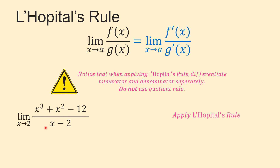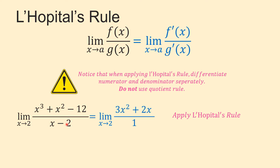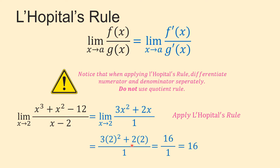So according to L'Hôpital's rule, we differentiate the numerator and denominator separately. The derivative of x³ + x² − 12 is 3x² + 2x. The derivative of the denominator (x − 2) is just 1. Now we plug in 2 for x: we get 3(2²) + 2(2) = 3(4) + 4 = 12 + 4 = 16. So the value of this limit is 16.